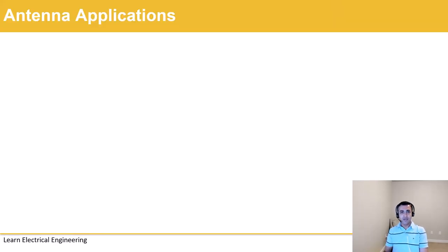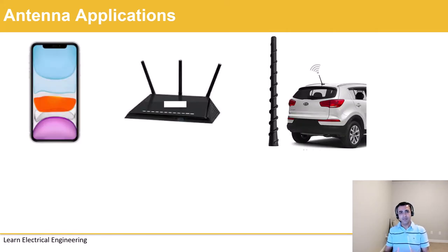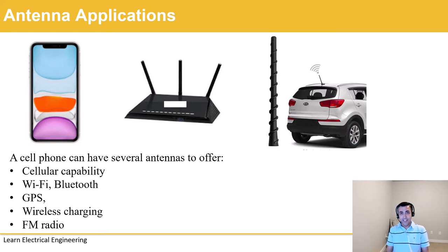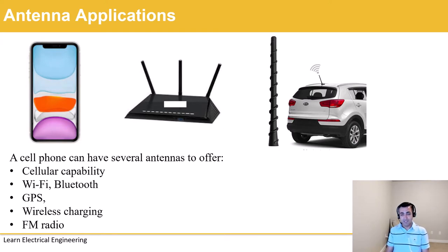So before we dive into the working mechanism of an antenna, it's perhaps important to understand its applications. An antenna is an integral part of any wireless communication device, ranging from a cell phone to Wi-Fi router to a car radio and the list goes on. A cell phone which each of us uses every day has actually several antennas to cover different operations like cellular capability, Wi-Fi, GPS, wireless charging, FM radio and other applications.